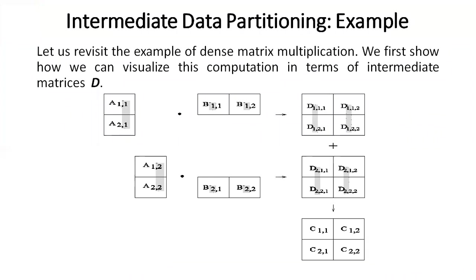Let's revisit the example of dense matrix multiplication. We will show how we can visualize this computation in terms of an intermediate matrix D. The intermediate matrix D is selected for decomposition and is further decomposed to improve the performance of the parallel system. The first column of the first matrix is multiplied with the first row of the second matrix to yield the resultant matrix D. Then the second column of the first matrix is multiplied with the second row, and we get another resultant matrix D.